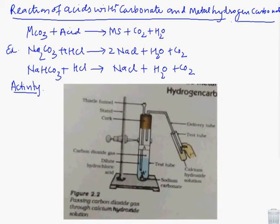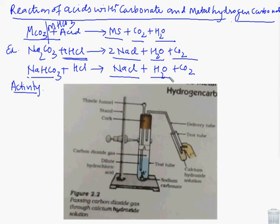The second property: reaction of acids with carbonates and metal hydrogen carbonates. When acids react with metal carbonates or metal hydrogen carbonates, they form metal salt, carbon dioxide and water. For example, sodium carbonate reacts with hydrochloric acid, the products formed are sodium salt NaCl, water H2O, and carbon dioxide. Same if it reacts with sodium hydrogen carbonate, it again forms sodium chloride, water, and carbon dioxide.